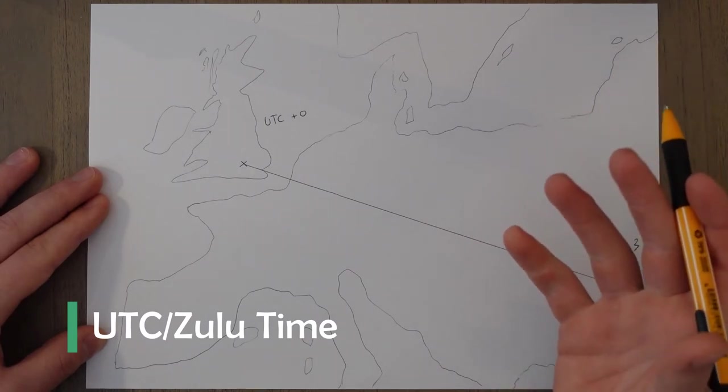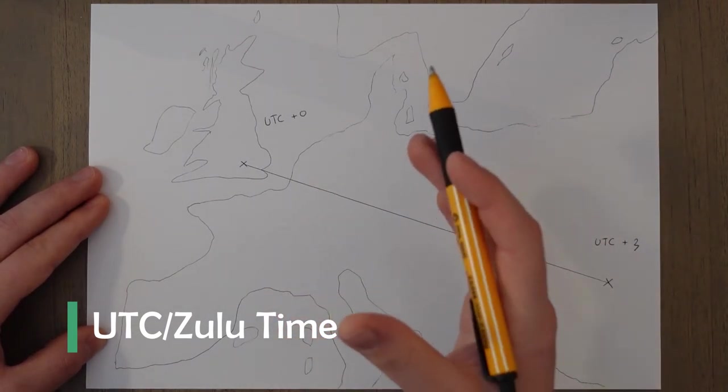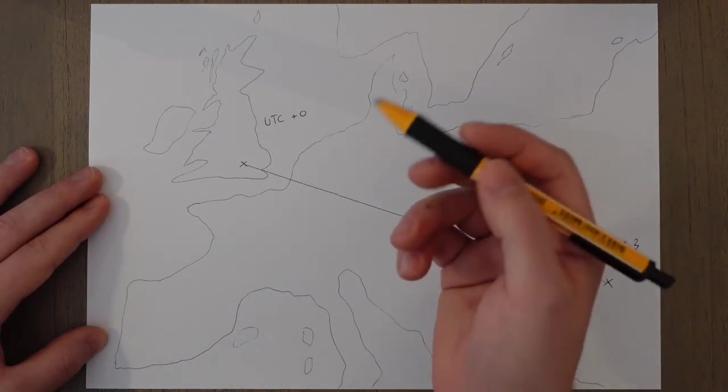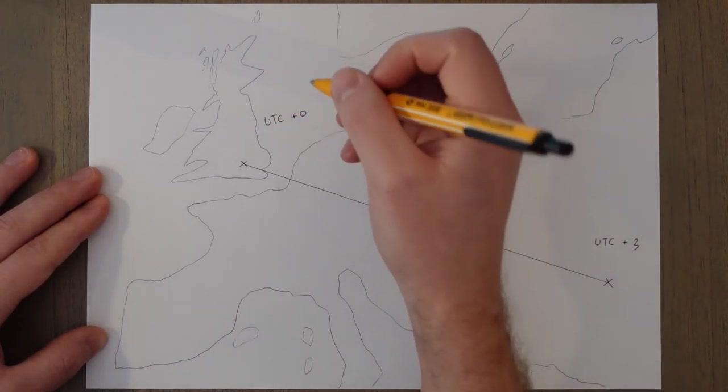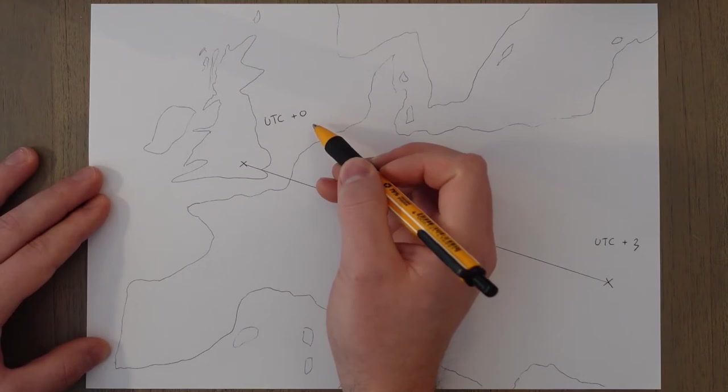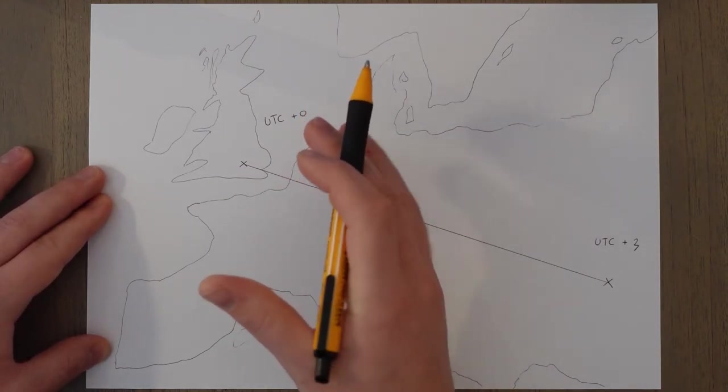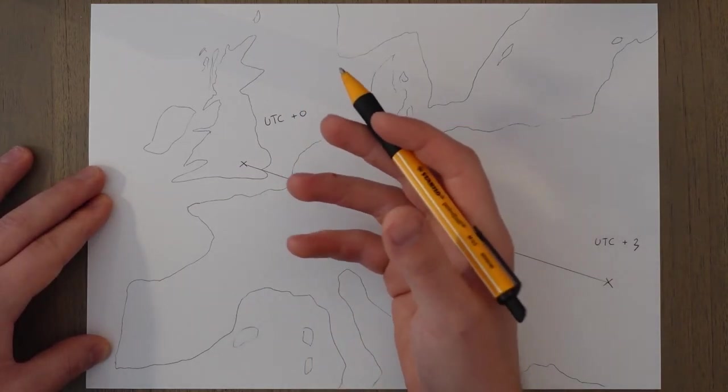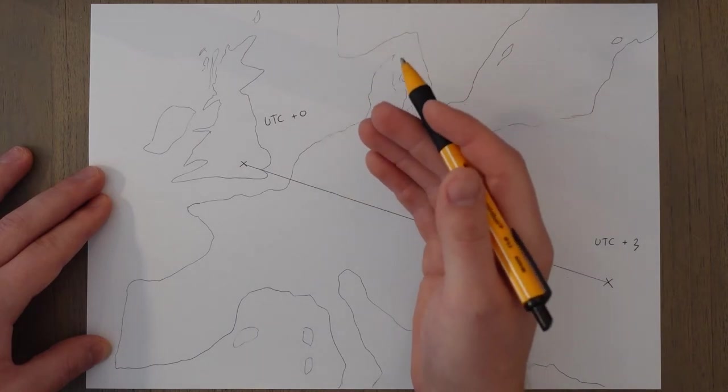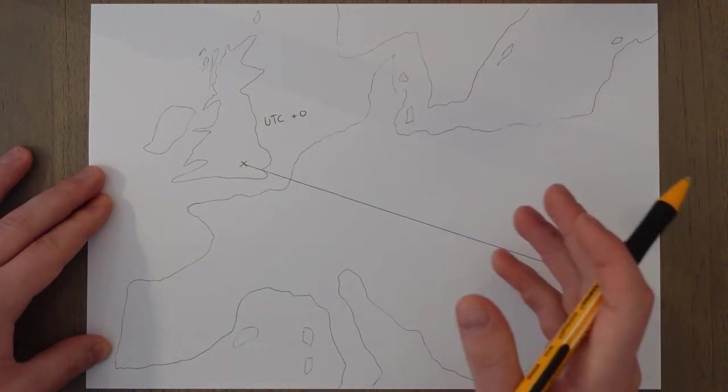So UTC, the Universal Time Coordinated, is the time standard that we define time zones from. So the GMT time zone is technically UTC plus 0. So there's a slight difference between the two. GMT is a time zone and UTC is the time standard that we base all the zones off of.